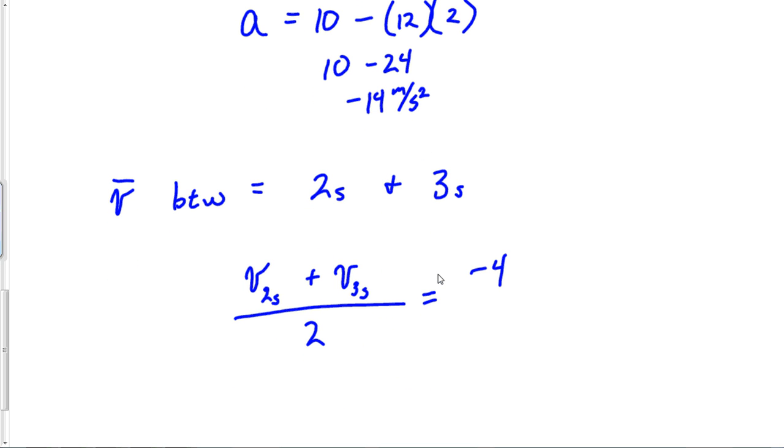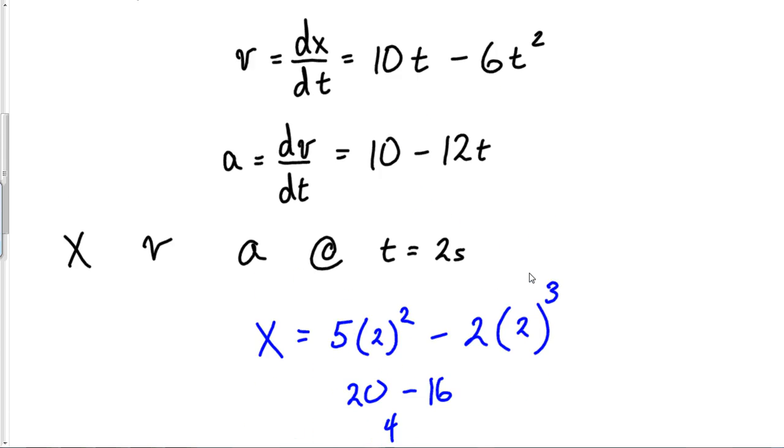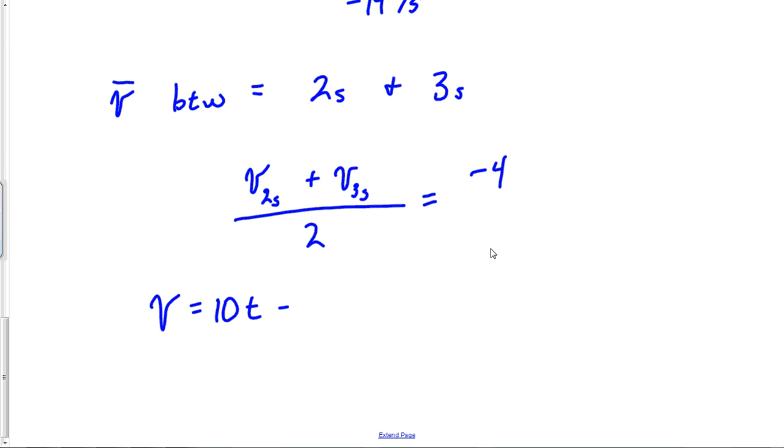Now I just need my velocity at three seconds. My velocity equation is 10t - 6t². So if I want to find at 3, that's 10 times 3 minus 6 times 3². This is 30 minus 6 times 9 is 54. 30 minus 54 is negative 24.